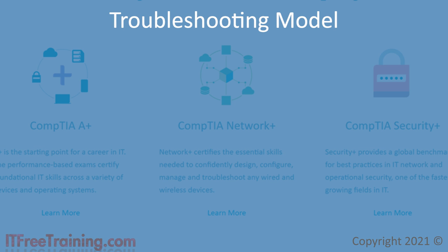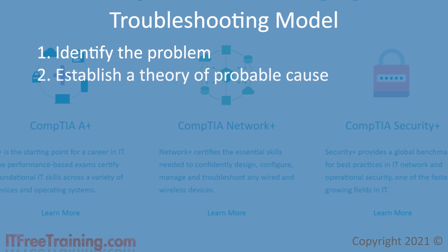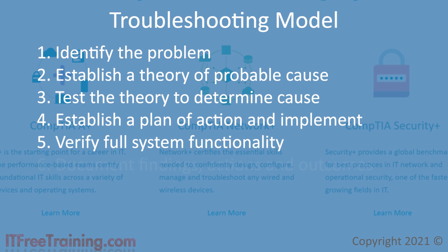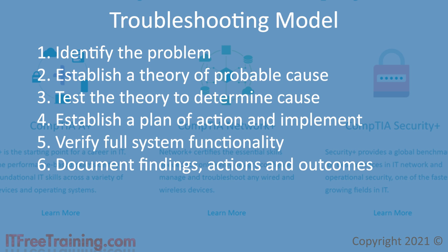The CompTIA troubleshooting model has six different steps: identify the problem, establish a theory of probable cause, test the theory, establish a plan of action and implement, verify full system functionality, and document findings, actions and outcomes. Although you will most likely develop your own system about how to fix problems, this gives a basic framework on how to look at problems.